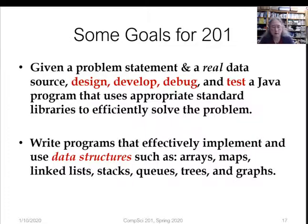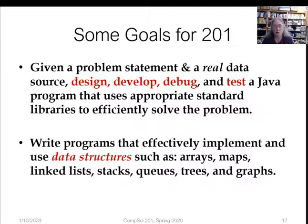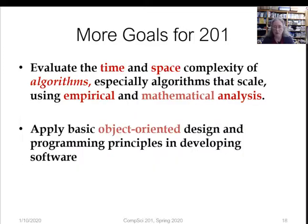Some goals for Comp Sci 201: you'll be given problem statements, possibly with real data, and you'll want to design a solution, develop it, debug it, test it, and get it to work using libraries. We want those programs to be efficient. You'll have to decide which data structures to use — array, map, linked list, stacks, queues. We'll also evaluate time and space complexity of algorithms, especially at scale, and apply basic object-oriented design and programming principles.